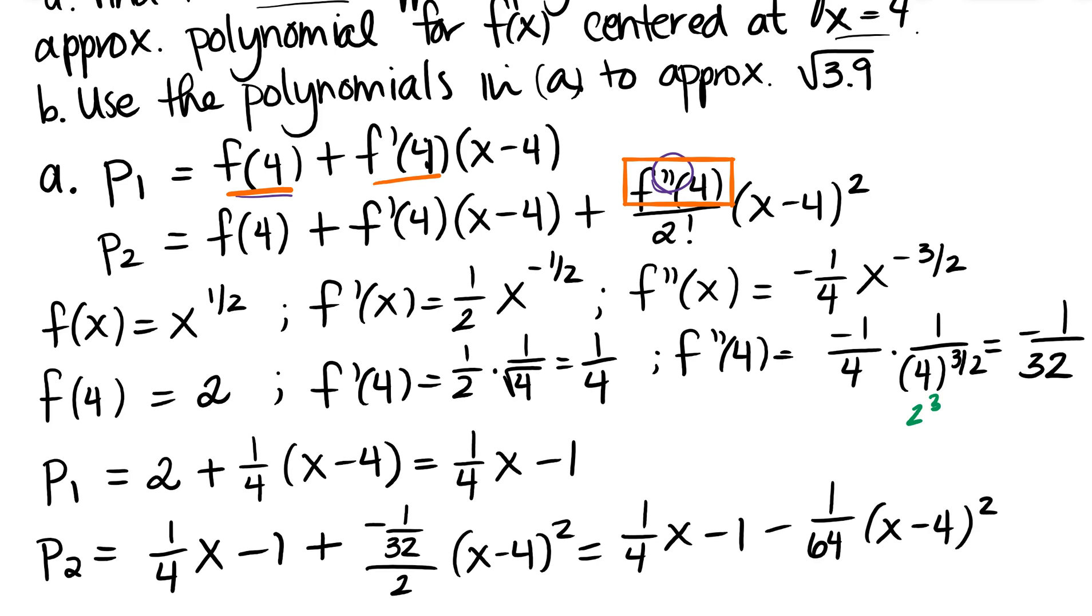So it looks like I get 1 fourth x minus 1 minus 1 64th times x minus 4 quantity squared. And I'm not going to simplify that. And some would argue that you wouldn't want to maybe even simplify this because you're going to be putting in an x value. But there's my first order, there's my linear approximation, and then there's my quadratic approximation.